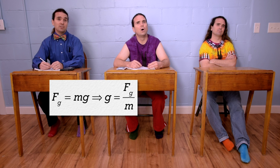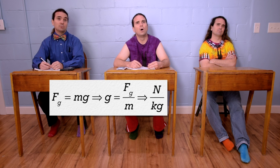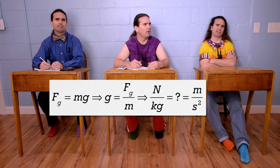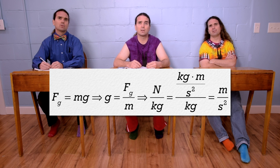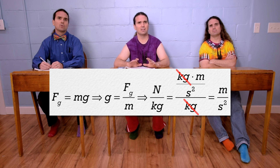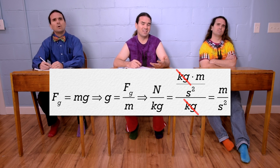That would be force in newtons divided by mass in kilograms, so newtons over kilograms. I thought acceleration was in meters per second squared. It's the same thing because newtons are kilograms times meters per second squared, so if you divide that by kilograms, you get meters per second squared. I get the units, but I don't know what this is.